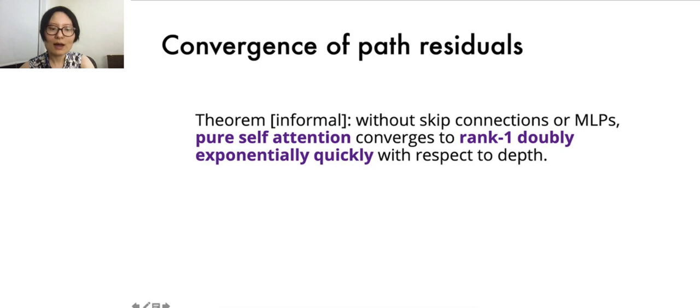So, how does a rank-collapse phenomenon manifest? Here's an informal theorem statement. A pure self-attention network, i.e., without skip connections or MLPs, converges to rank one doubly exponentially quickly with respect to network depth.